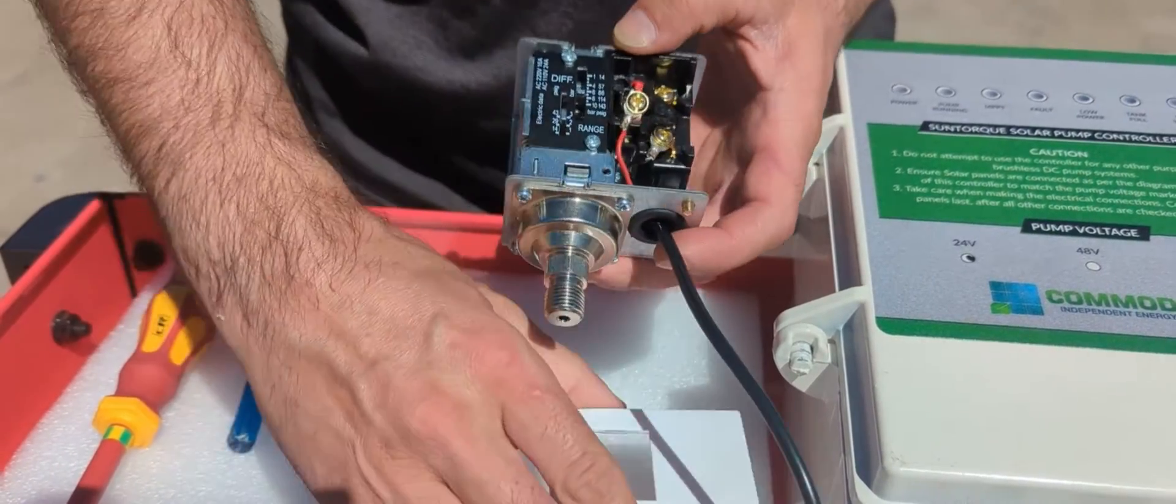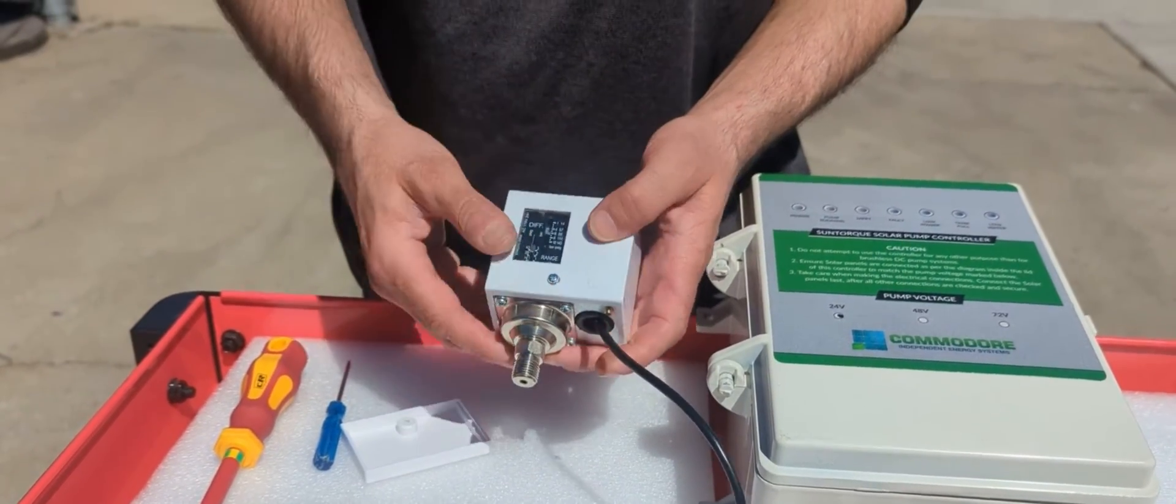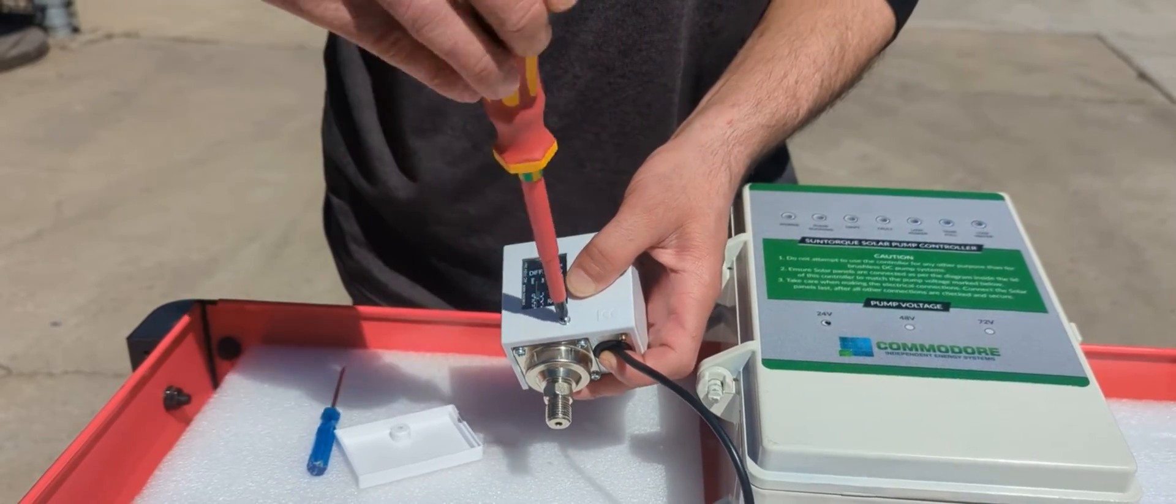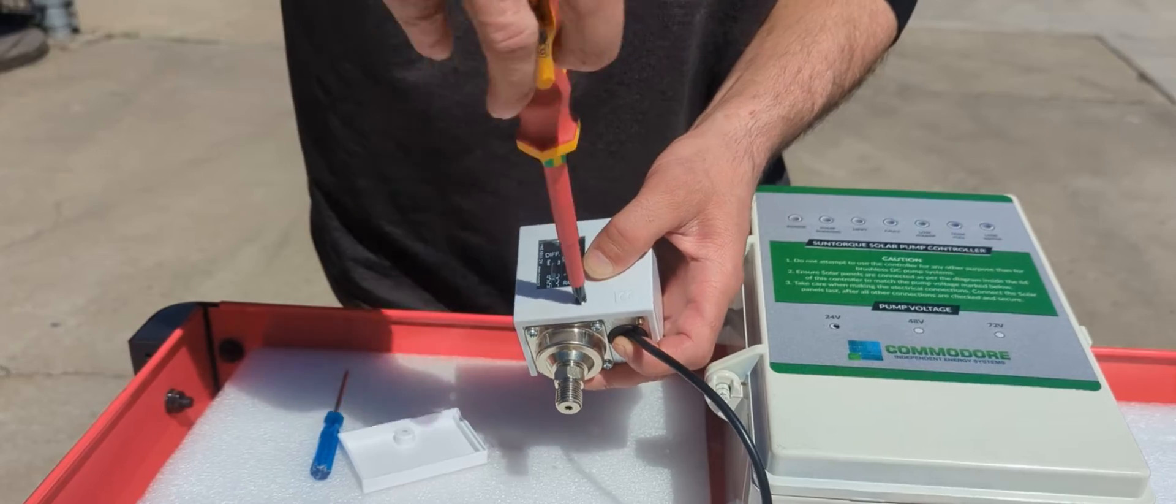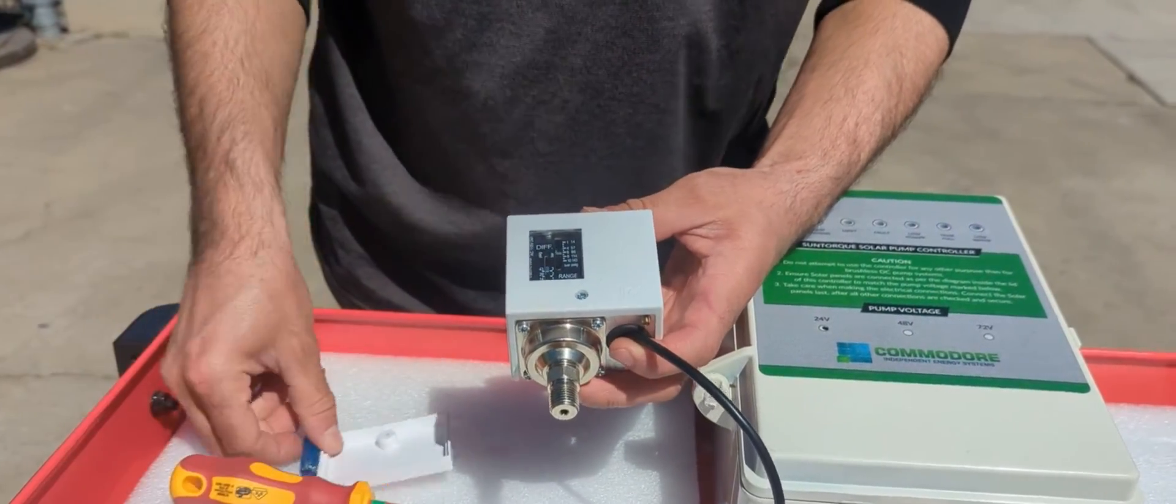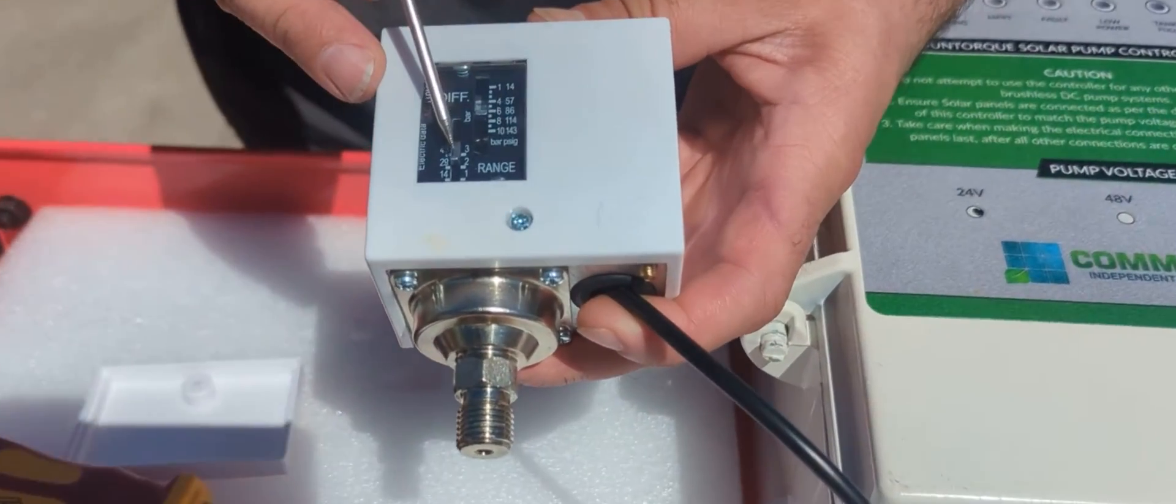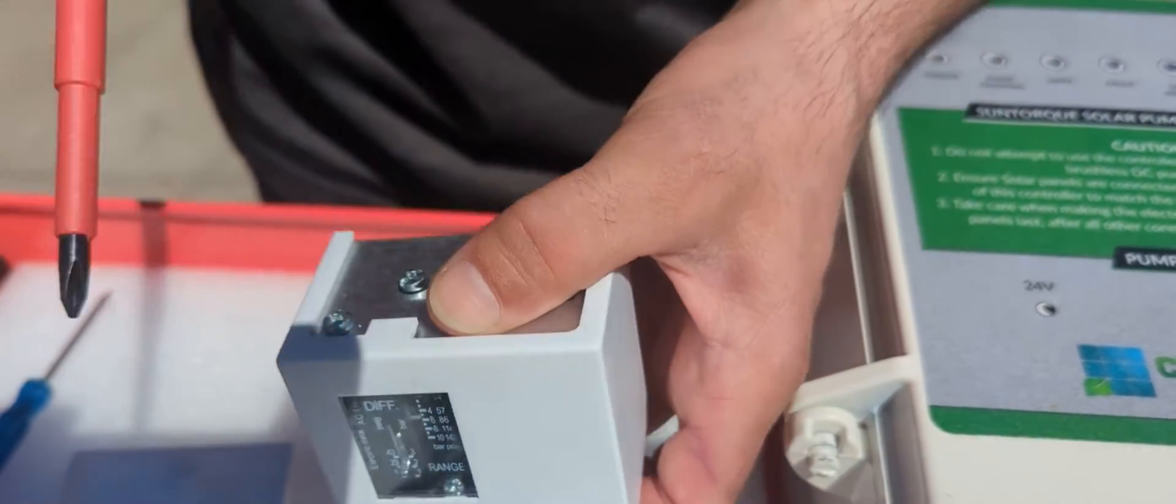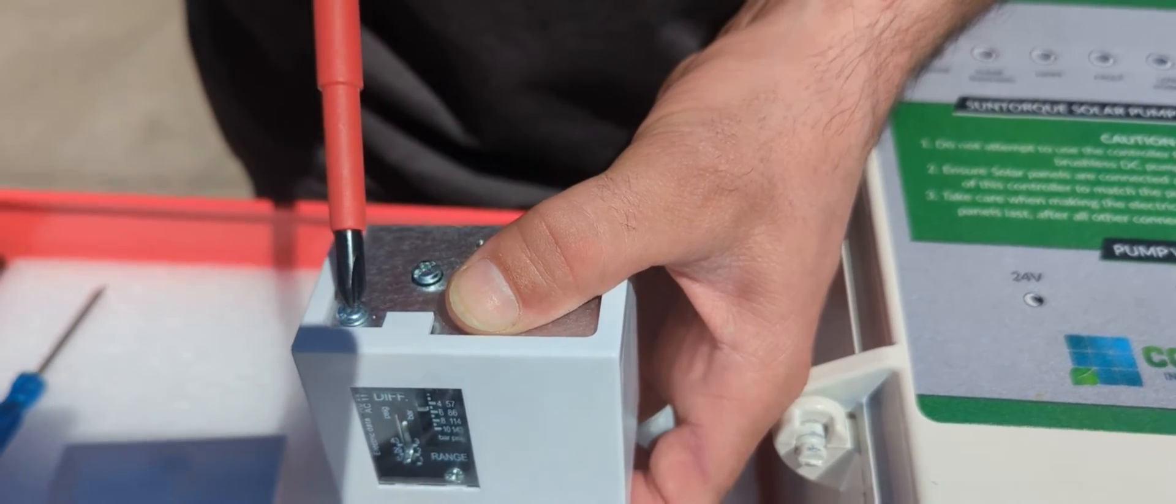Now that we've got that wired in, put our screens back on. Now you can see here that you've got two dials. This one here is your cut-off point and this one here is your cut-in point. They can be adjusted by changing these two screws on the top. So this one does your cut-out, this one does your differential.